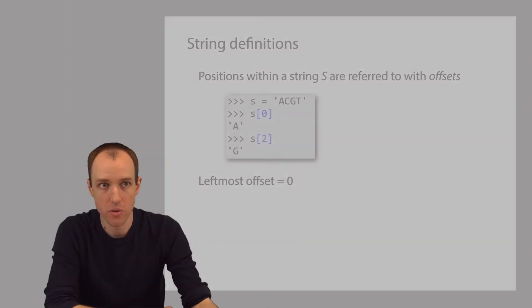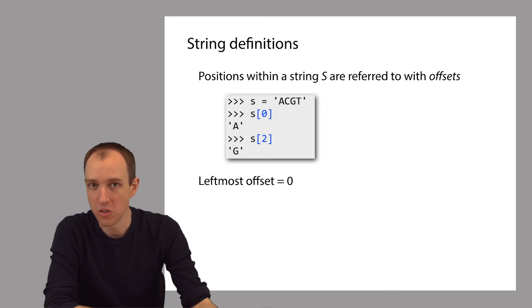When we want to refer to a particular position within a string, we use an offset. We use the convention that the leftmost offset, the offset of the leftmost character in the string, is 0.